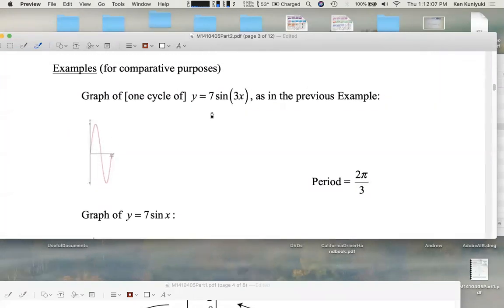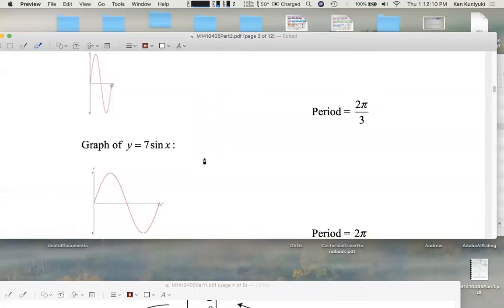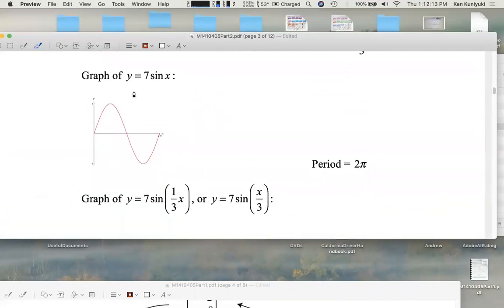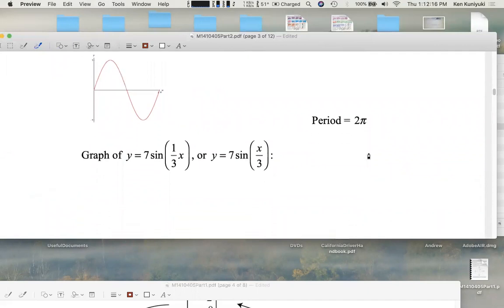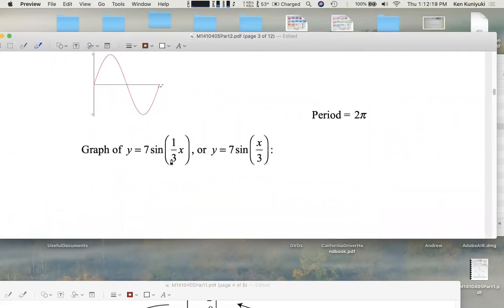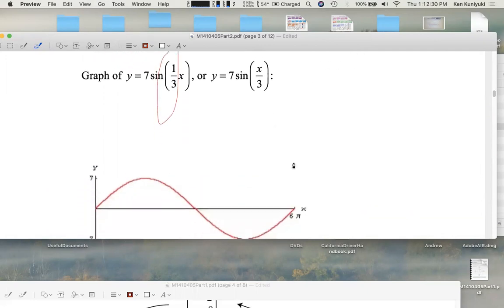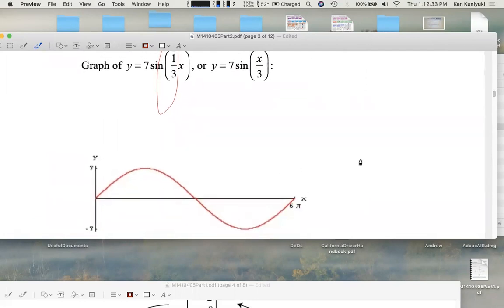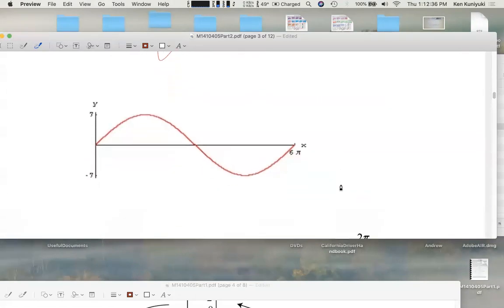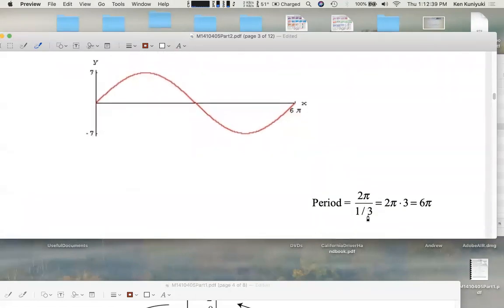So once again, as we change b, we change the period. Y equals 7 sine of x, period is 2 pi, like before. What about y equals 7 sine of 1 third x, or x over 3? When in doubt, write x over 3 as 1 third x. b here is 1 third. That leads to a stretch. We're stretching. It's stretched out by a factor of 3. The period, 2 pi over b is 1 third. If you divide by 1 third, you're multiplying by the reciprocal 3. 2 pi times 3 is 6 pi. It's stretched out.